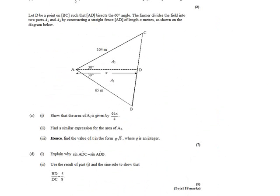Now it says: let D be a point on BC such that the line AD bisects the 60 degree angle — meaning it splits it into two 30 degree angles. The farmer will divide the field into two parts, area 1 and area 2, by putting a fence along the line AD of length X meters. With a 'show that' question, we can't use the information given; we must arrive at it using other information.